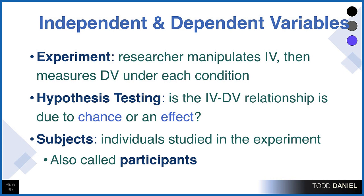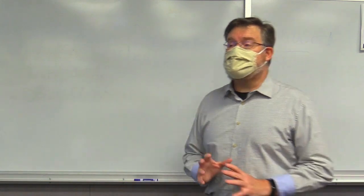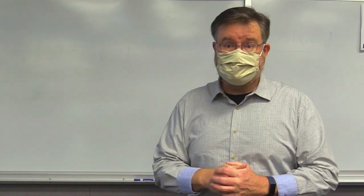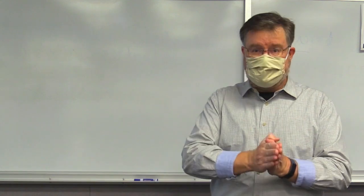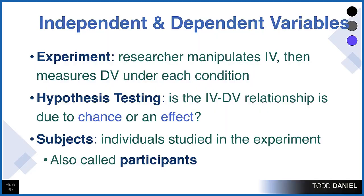Anytime we manipulate an independent variable and measure a dependent variable, we're doing an experiment. But it's important that we don't just rush into an experiment to see what happens, because when we do things like data mining or collect large amounts of data, it's quite possible that differences exist just through randomness. So it's important to state a hypothesis of what we think will happen before we do our research, and then see whether it happened. That's called hypothesis testing, which will actually be in the last block of what we'll be studying for this course.